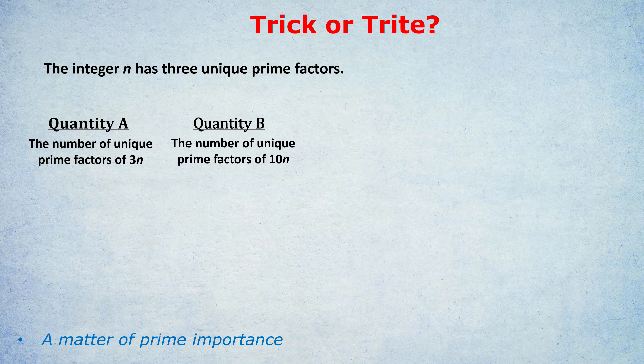So there are examples where 10n contains fewer unique prime factors than 3n. There are examples where the 10, bringing along a 5 and a 2, adds fewer unique prime factors than bringing in a 3 in quantity A. So sometimes quantity A can be bigger than quantity B.